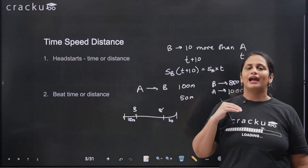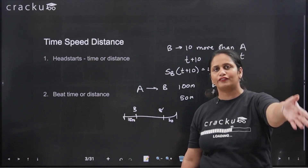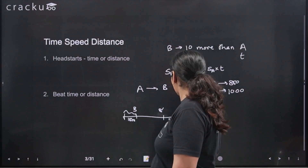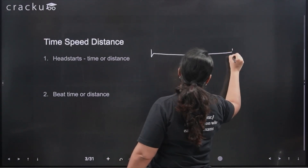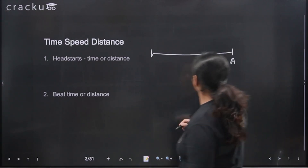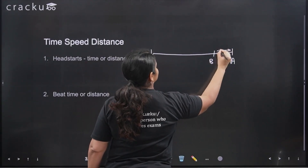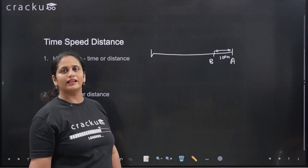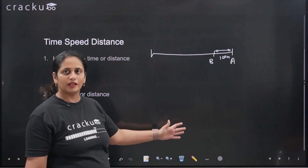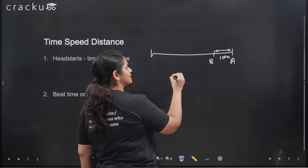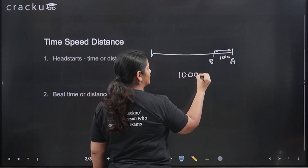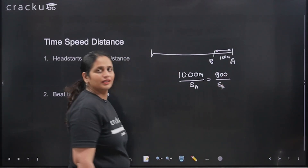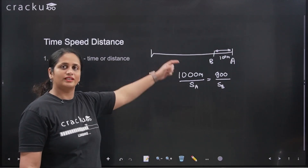Beat distance is the distance at the end of the race. If A and B start at the same time and A reaches the finish line while B is 100 meters behind, that 100 meters is the beat distance. Since they ran for the same amount of time, this is again a constant time question. The time taken by A to cover 1000 meters divided by speed of A equals the time taken by B to cover 900 meters divided by speed of B.